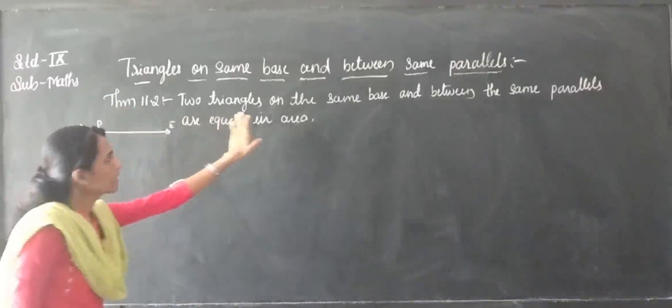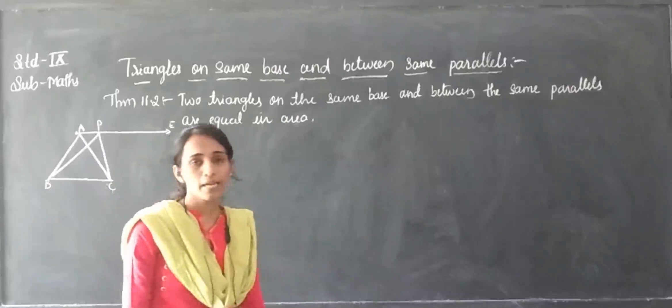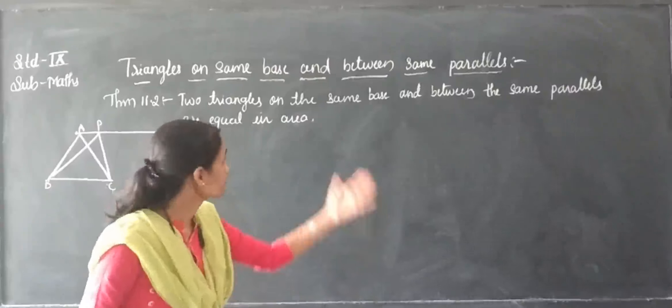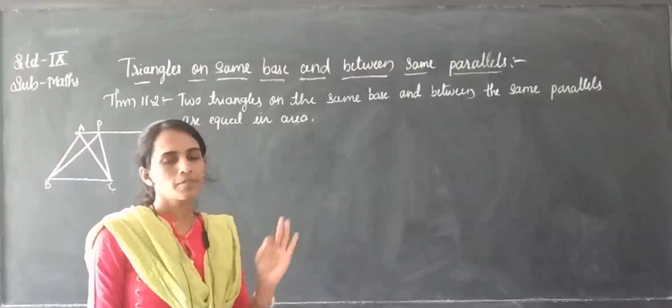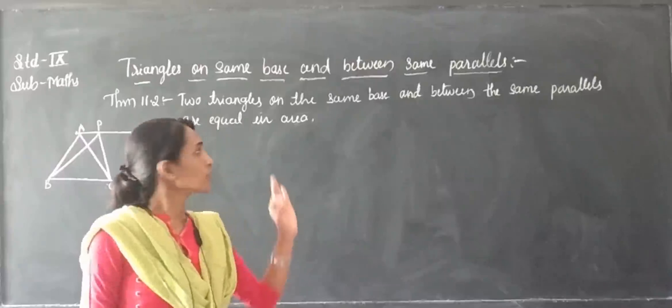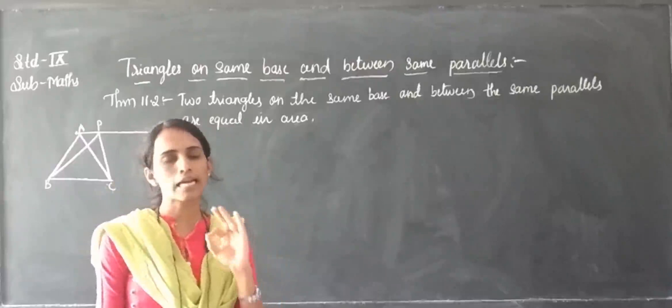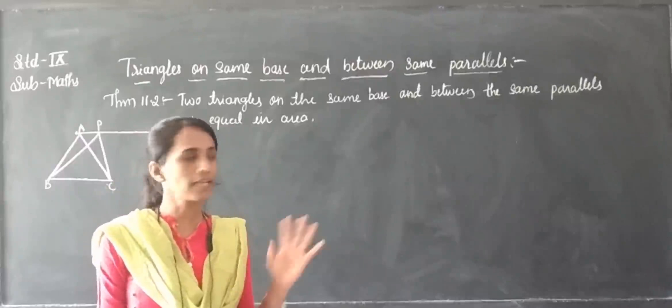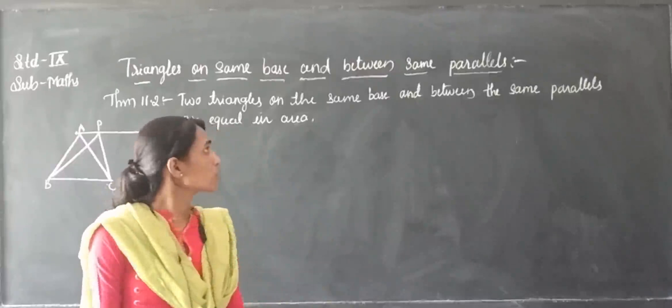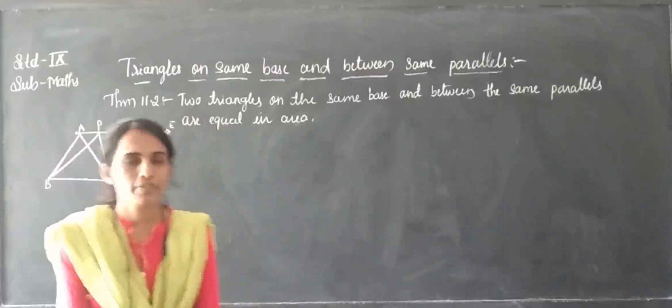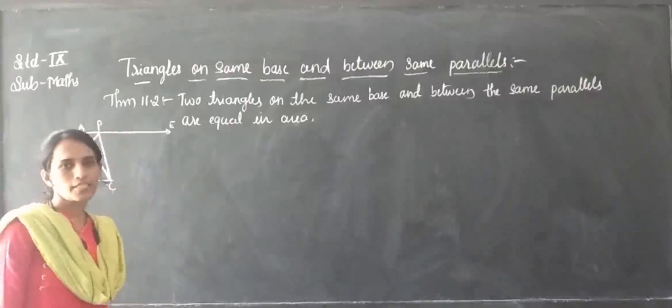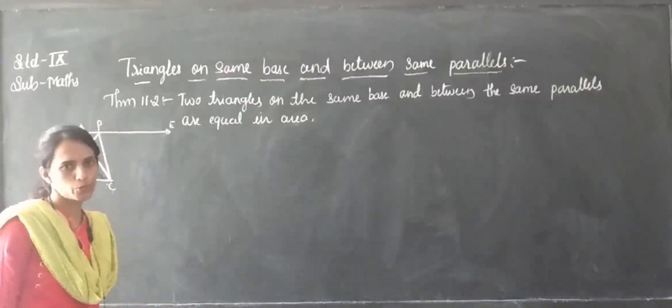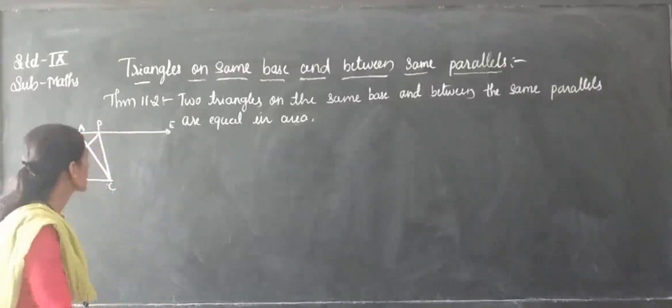Two parallels on the same base and between the same parallels are equal in areas. So how do I get the parallel ground? Where is the chosen here? That one is parallel ground — on the same base and between the same parallels, those areas are equal. Then, triangles on the same base and between the same parallels are equal in area.